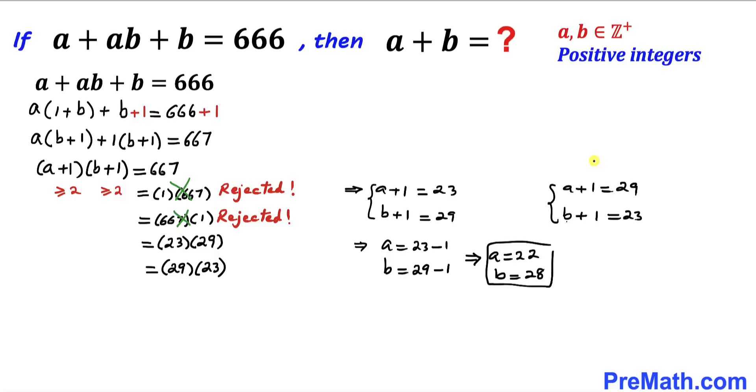Now let's focus on the second scenario. Moving these over gives us a equals 29 minus 1 and b equals 23 minus 1. Therefore, our a value is 28 and b value is 22.